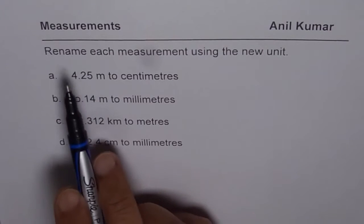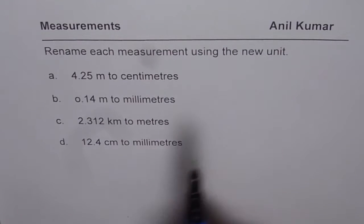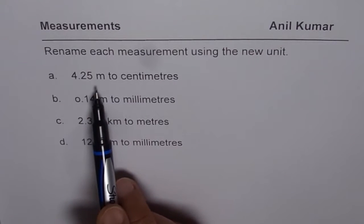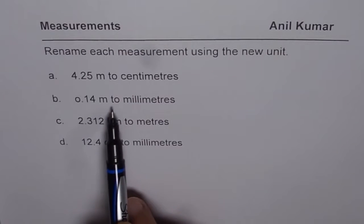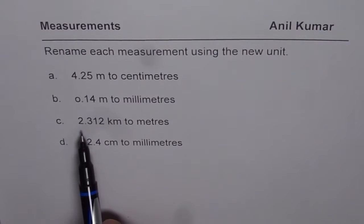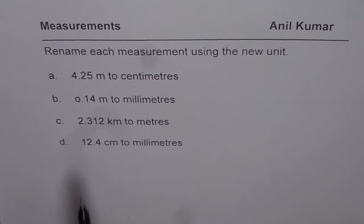Question here is, rename each measurement using the new unit. 4.25 meters to centimeters, 0.14 meters to millimeters, 2.312 kilometers to meters and 12.4 centimeters to millimeters.